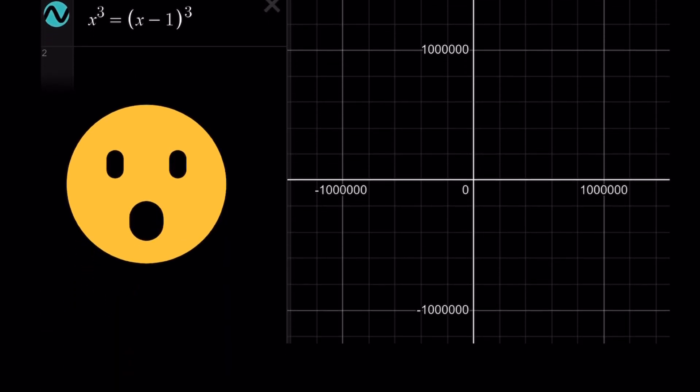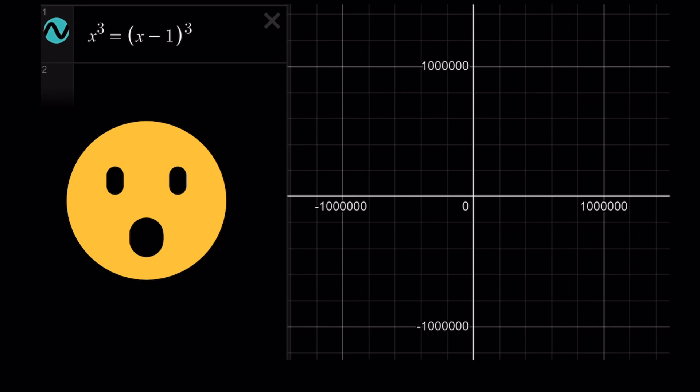We have the graph of x³ versus (x - 1)³, but unfortunately, even at the 1 million level, there's no intersection. Why? Because these two curves. Let's find out.